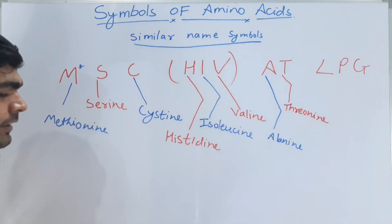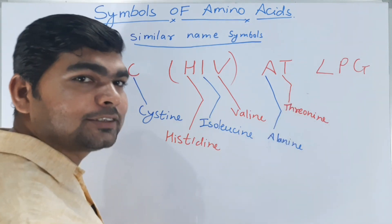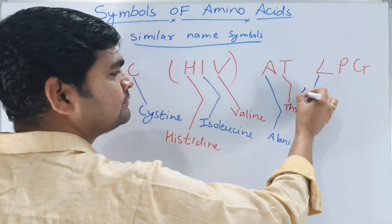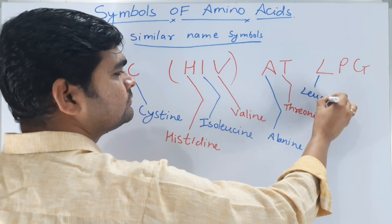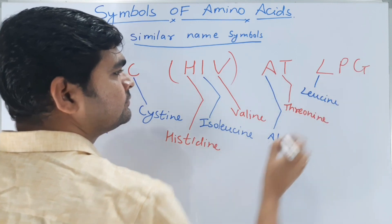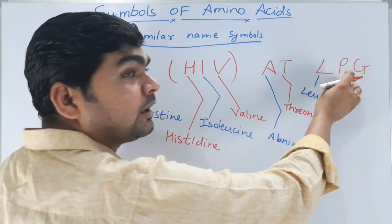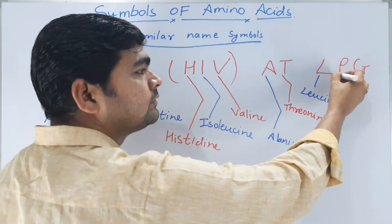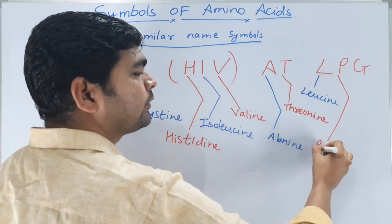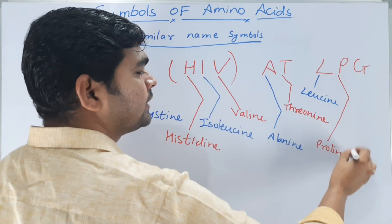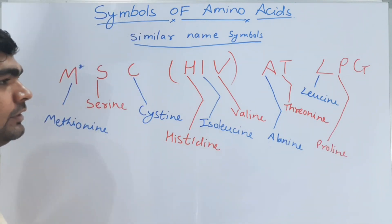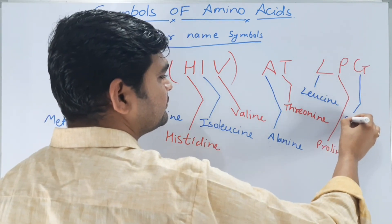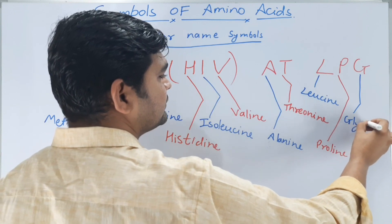Now for LPG: L is the symbol for leucine. P is the symbol for proline. And the last one, G, is the symbol for glycine.